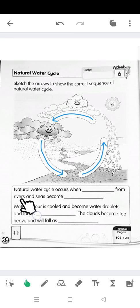Next, we are going to complete the sentence below. Natural Water Cycle occurs when water from rivers and seas become water vapour. I repeat. Natural Water Cycle occurs when water from rivers and seas become water vapour. Water vapour is cooled and become water droplets and form clouds.